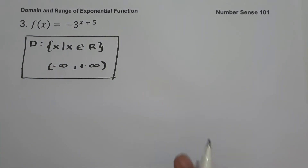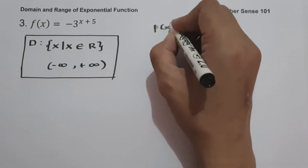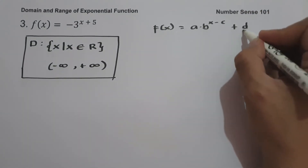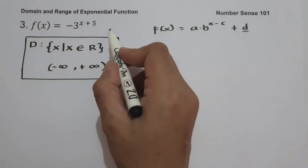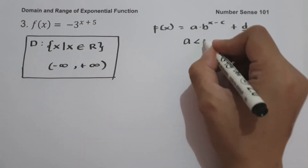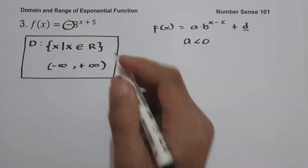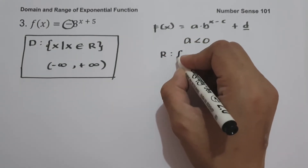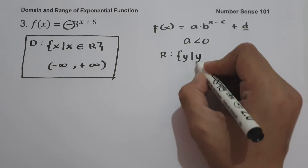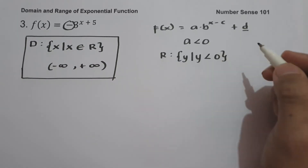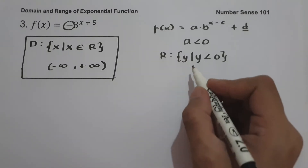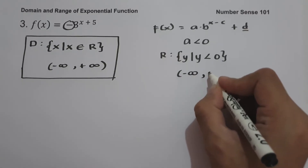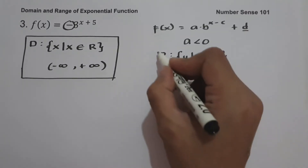To find the range, since the function is written in the form f(x) = a times b raised to x minus c plus d, the horizontal asymptote d is 0, and a is less than 0 because we have a negative sign. Therefore, the range is the set of y values such that y is less than 0, or in interval notation, from negative infinity up to 0, where 0 is not included.